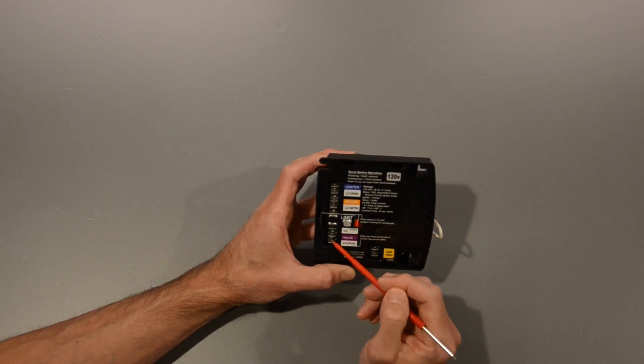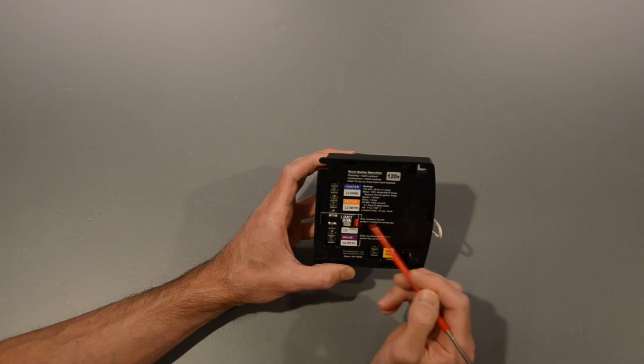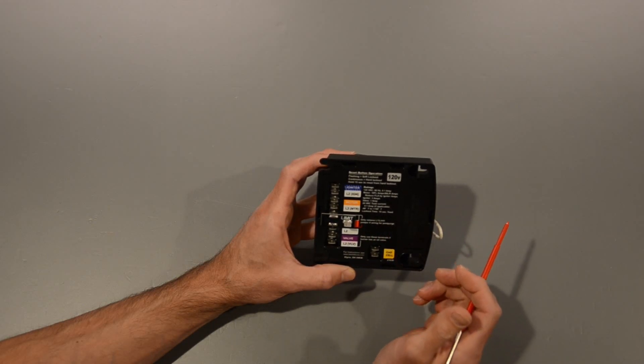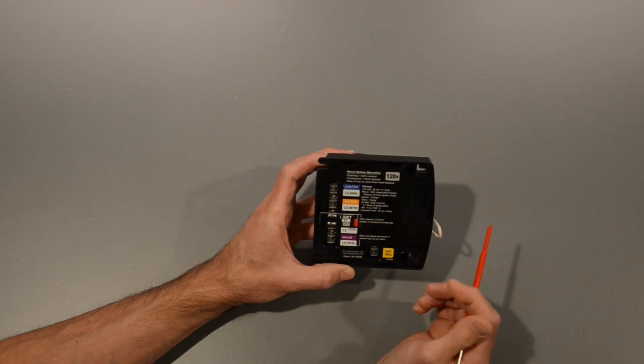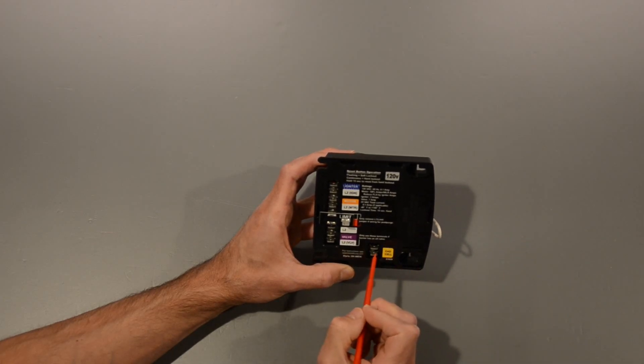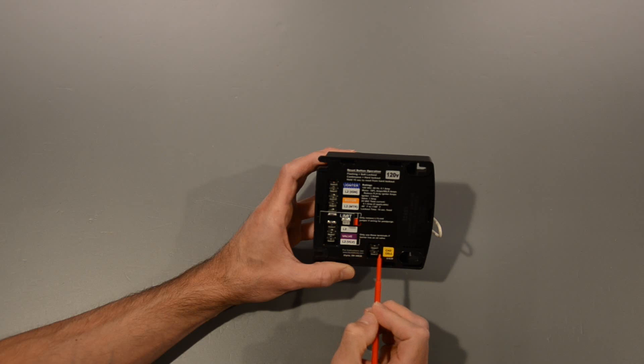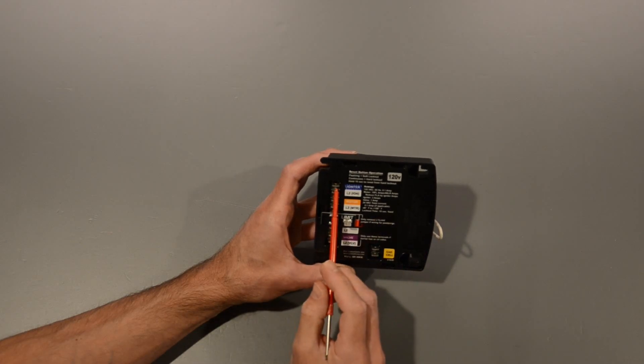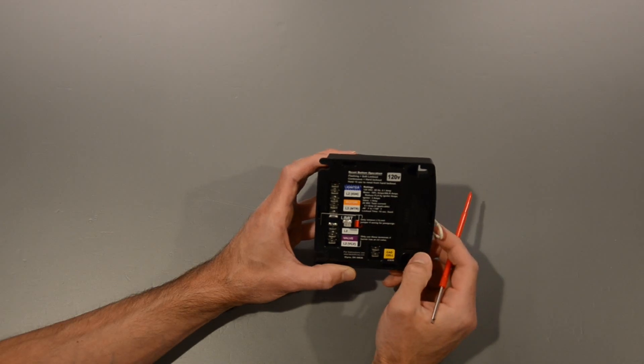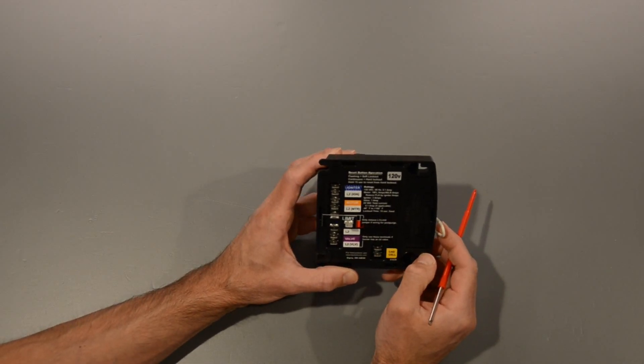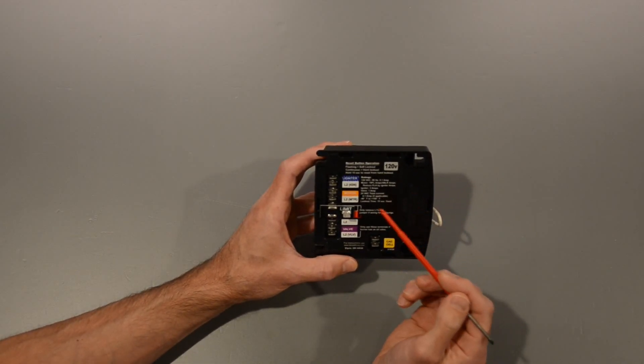After the solenoid valve opens, the controller goes through a trial for ignition period, which usually lasts about 10 seconds. After this 10 second period, the cadmium sulfide cell checks to make sure that there is a flame, and as long as this is detecting light, it will shut off the ignition and allow the burner to run until it hits the high limit, at which point, at least in this system, power would shut off and everything would then be powered off.